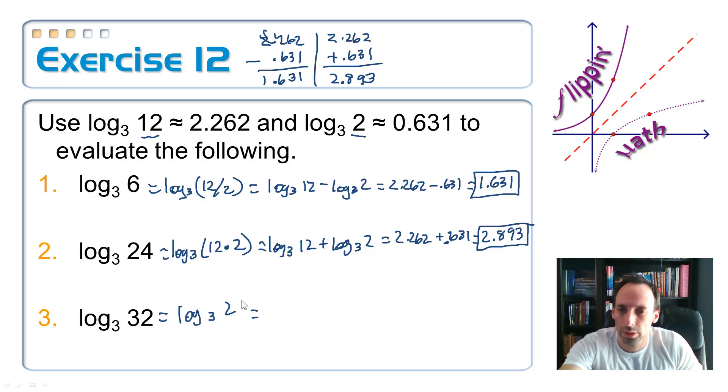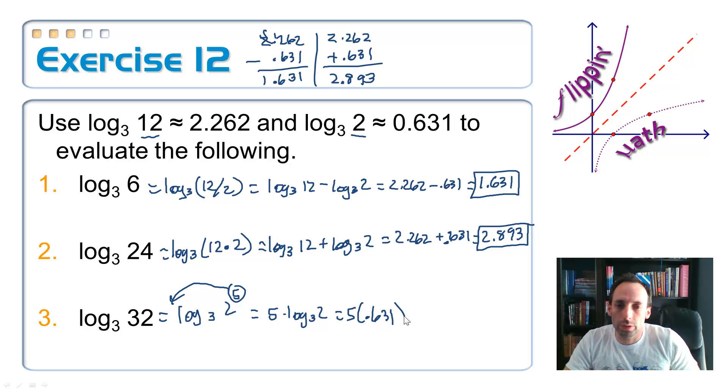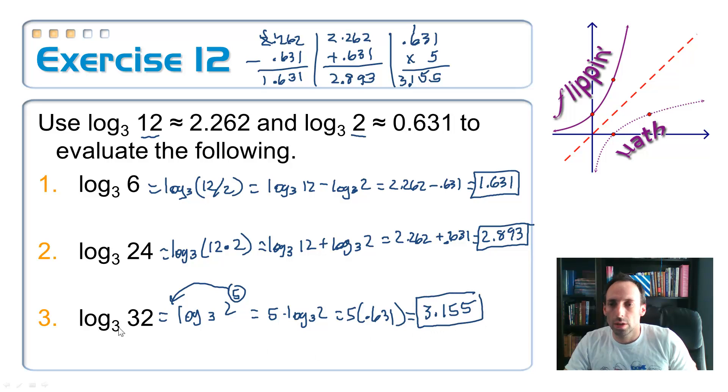All right. So, using the power property, I take this 5 and I whip it out front. It becomes multiplication. 5 times the log base 3 of 2. And, I'm just basically multiplying 5 times .631. Let's do multiplication now by hand. .631 times 5. 5 of 15, carry the 1, 31 decimal. This is equal to 3.155. Again, 3 to approximately the 3.155 power should give us 32. Okay.